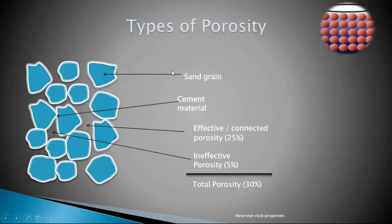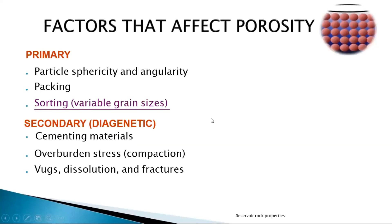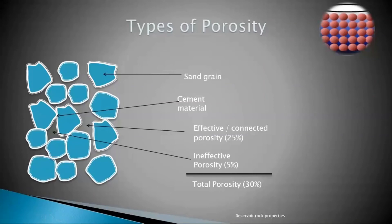To summarize: effective porosity is not trapped by the rock matrix, while ineffective porosity is trapped by the rock matrix. A student asked whether both types exist in the same rock — yes, they do. Another asked if there is a technique to benefit from ineffective porosity — the answer is fracturing. We fracture the rock, and that is how we access it.